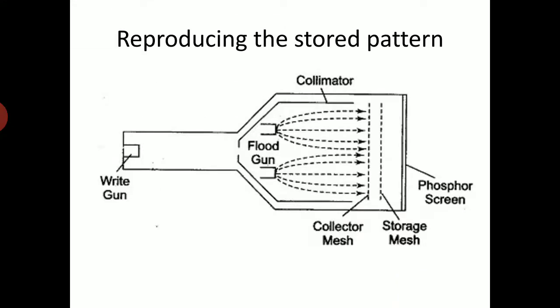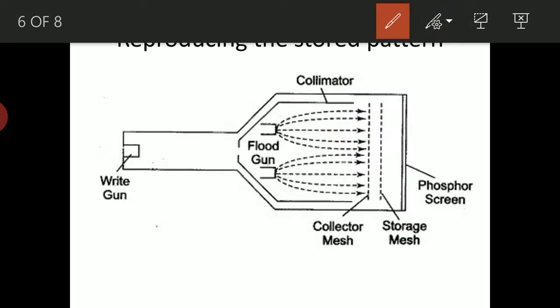So, if we want to reproduce this stored pattern, all we need to do is allow a flood of electrons to pass through the storage mesh. The storage mesh will allow only electrons to pass through the positively charged regions. Whatever pattern was earlier etched — suppose it is a sine wave — the electrons can pass through only where a positive charge exists. The flood gun supplies enough electrons, the collimator spreads them in parallel, and the earlier stored pattern on the storage mesh is reproduced on the phosphor screen.